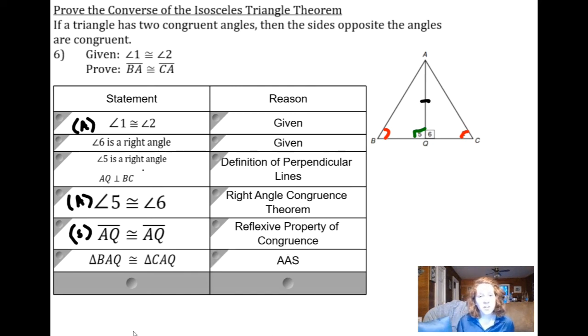And once I know that those are congruent, well then their corresponding parts must be congruent. It's clear from inspection that this hypotenuse, the one right across from my right angle, is going to be corresponding to the other hypotenuse. And those must be congruent. The reason is that corresponding parts of congruent triangles are congruent, and we're done.